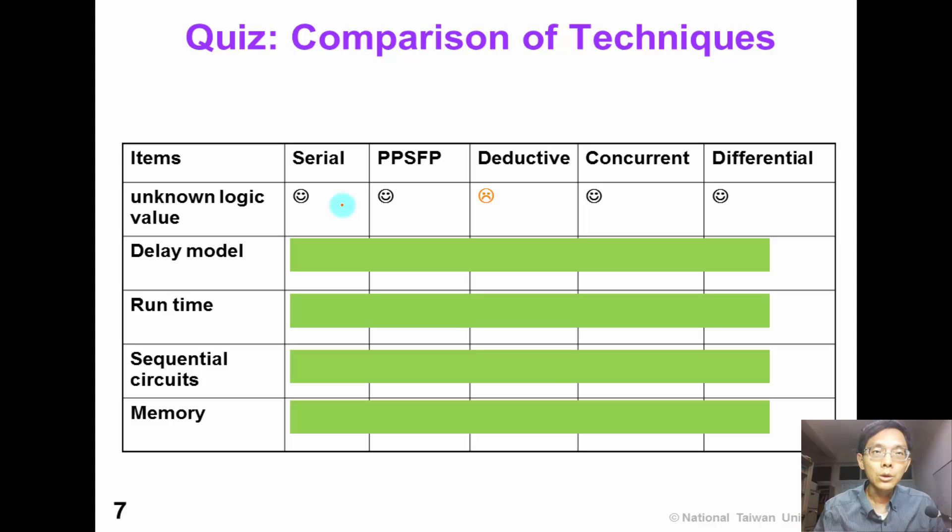In conclusion, we have shown different fault simulation techniques in this chapter. Now, we want to compare the pros and cons of these techniques. The first requirement is unknown logic values.